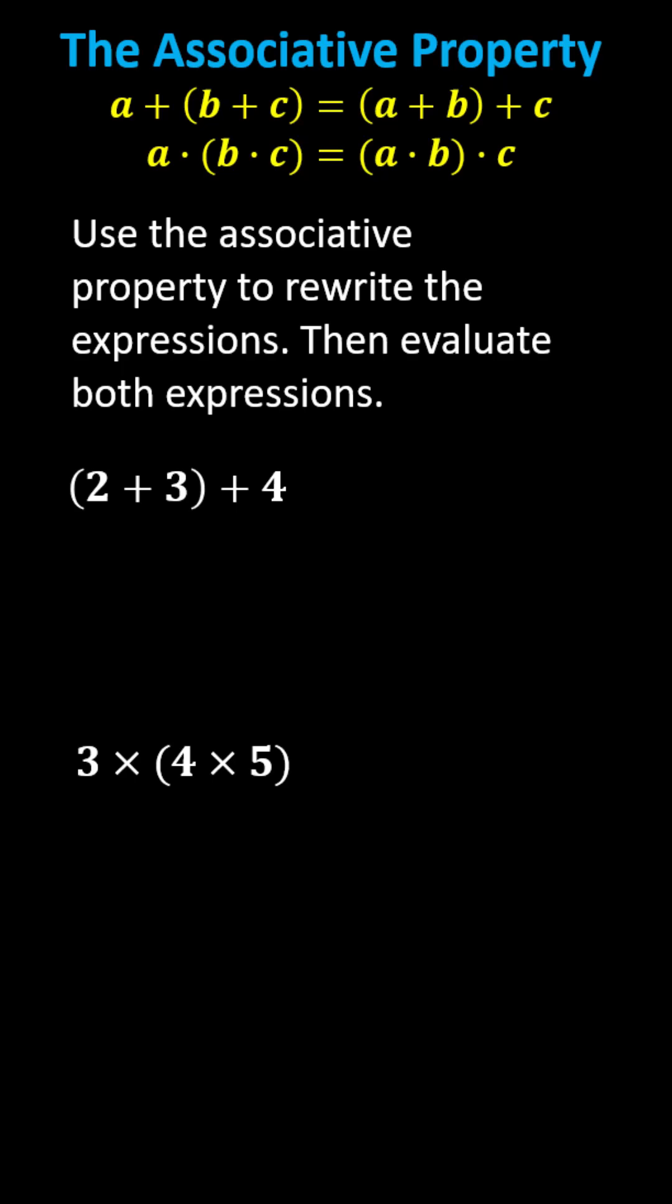For the first expression we have the sum of two and three plus four applying the associative property of addition. This is equivalent to two plus the sum of three and four.